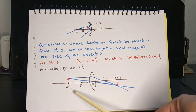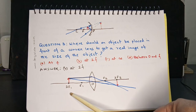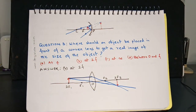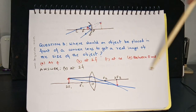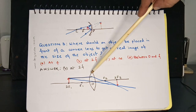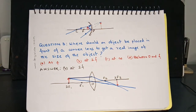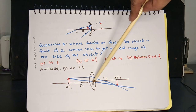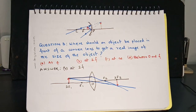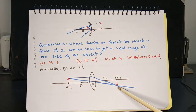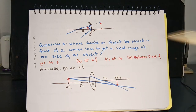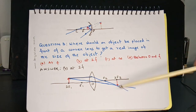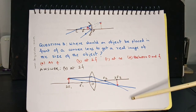Here the object is kept at 2F₁ on the left side of the lens. Light rays coming parallel to the principal axis, after refraction from the lens, pass through F₂. The ray going through O emerges without deviation. Both refracted rays intersect at a point coincident with 2F₂, so the image is inverted and of equal size as the object.